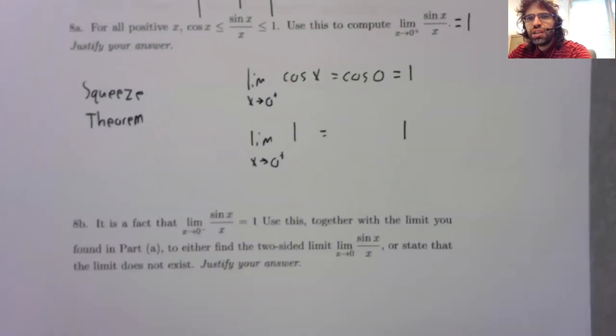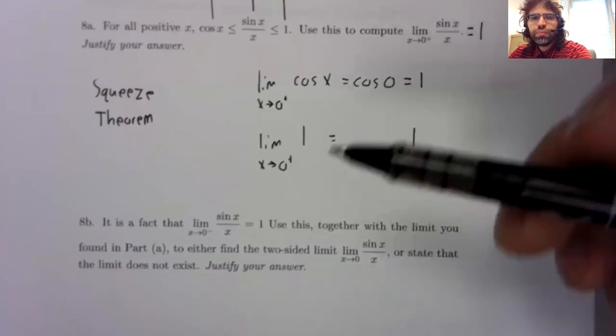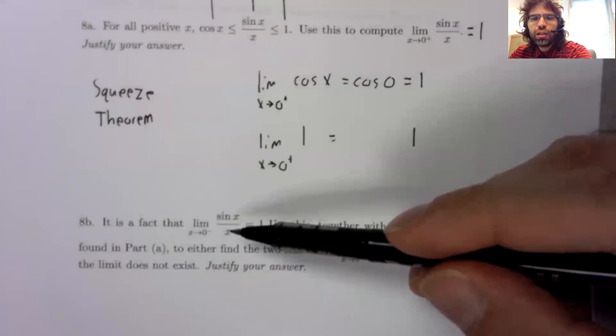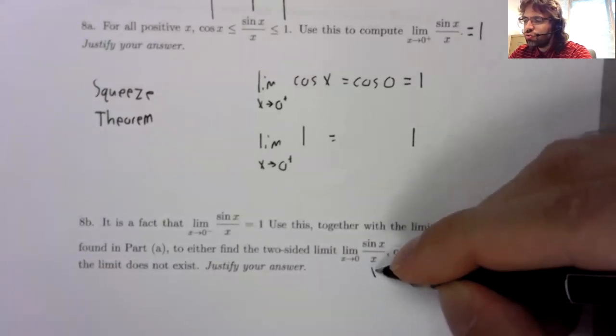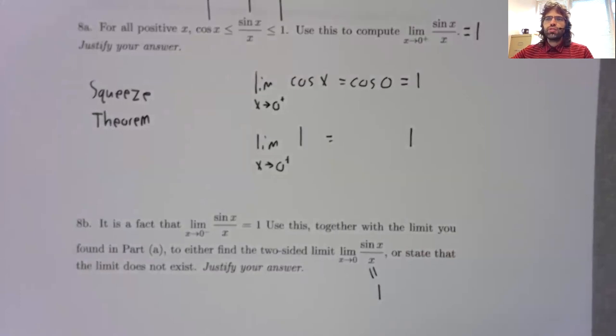Eight B, if the right hand limit is one, and the left hand limit is one, the two sided limit is one. Remember that a two sided limit exists if the left and right hand limits exist and are equal to each other.